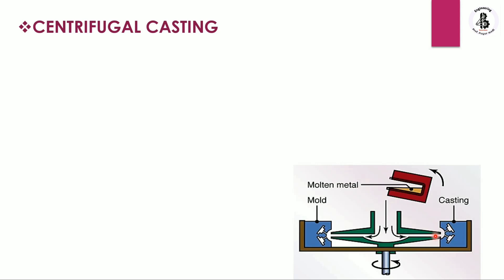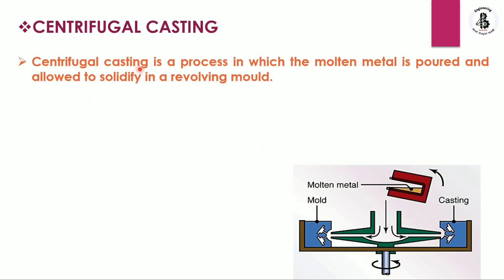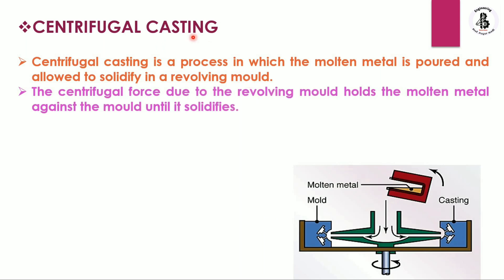So let us start with the basics about centrifugal castings. Centrifugal casting is a process in which the molten metal is poured and allowed to solidify into a revolving mold. The centrifugal force due to the revolving mold holds the molten metal against the mold until it solidifies.